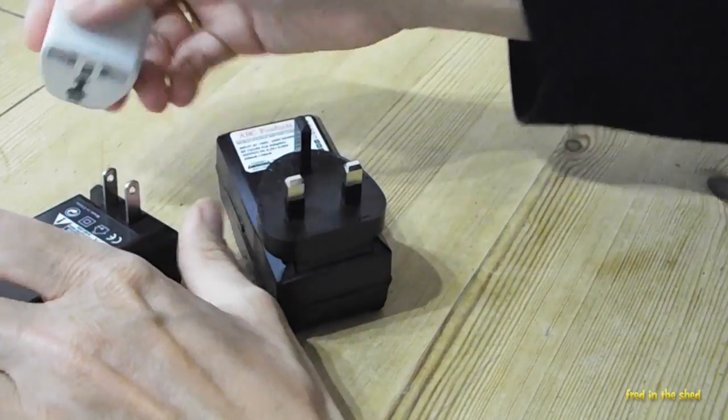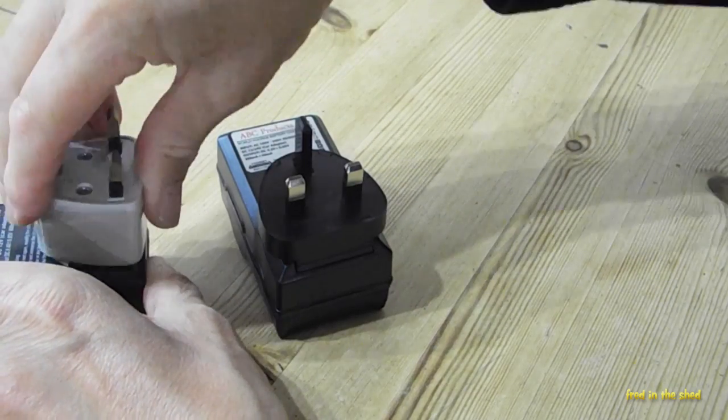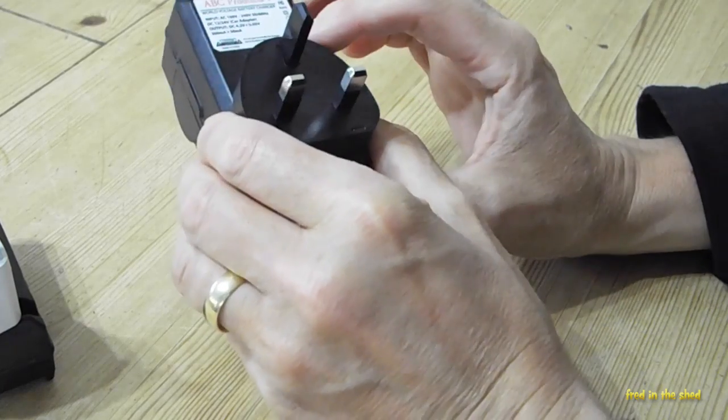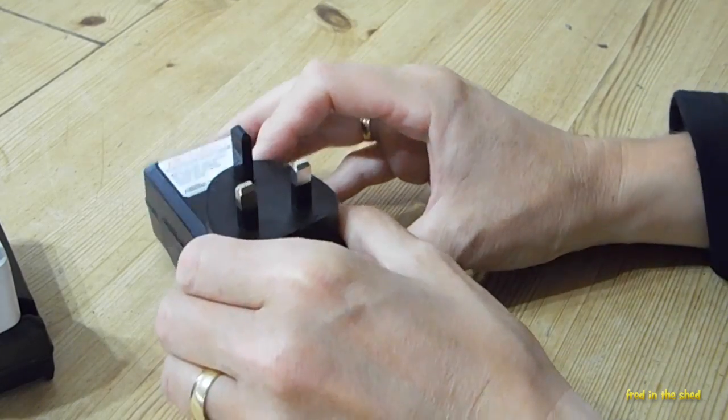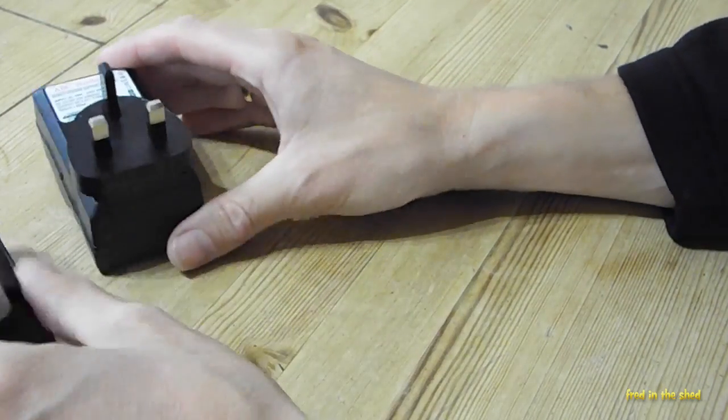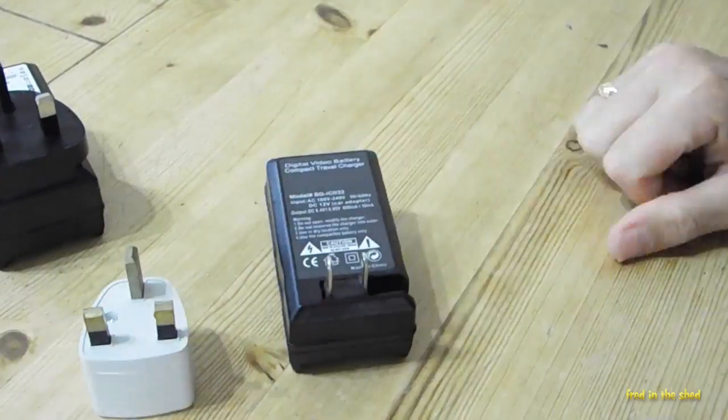So I suggest that when you look on the listing, just see if they show the actual recharger or adapter. So, okay, well, that's all very well, isn't it? But what can you do if it comes from the post and that's what you get?